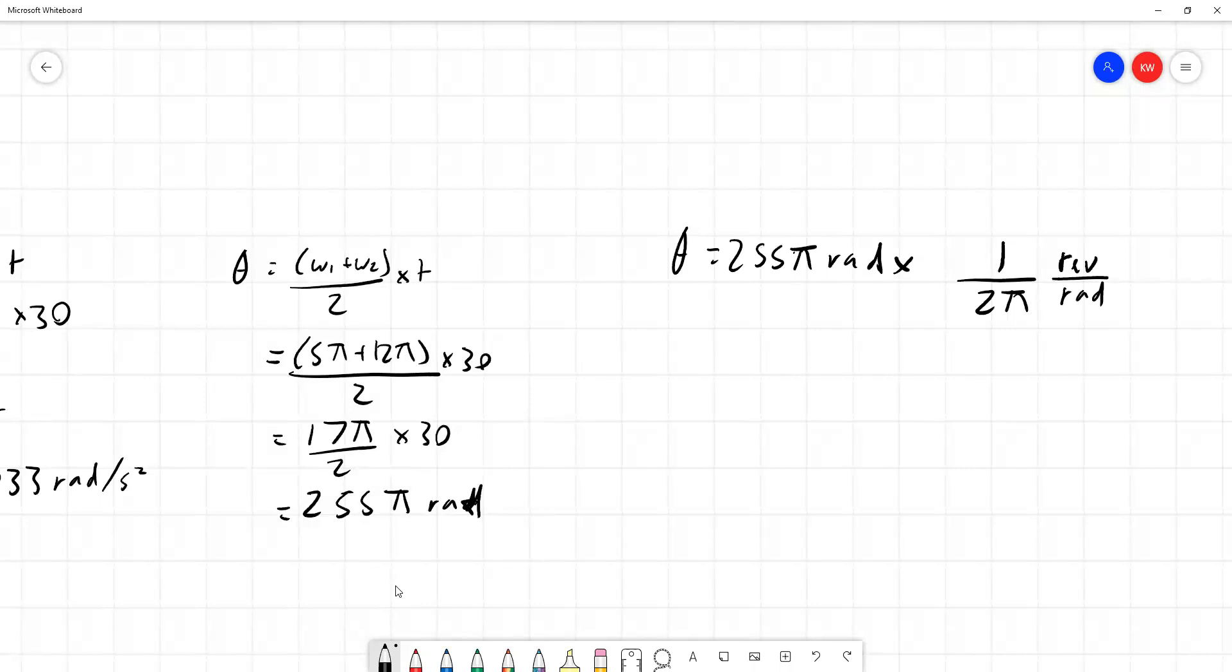To convert 255 pi radians into revolutions we divide by 2 pi. This gives us 255 pi divided by 2 pi revolutions, and we cancel out the pi's, divide 255 by 2, and we're left with 127.5 revolutions.